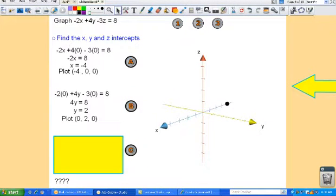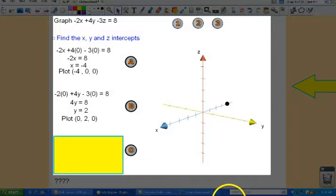To find the Y-intercept, you let X and Z be zero, and you solve for Y, and you plot that point.